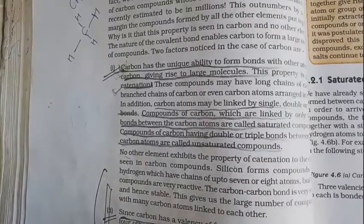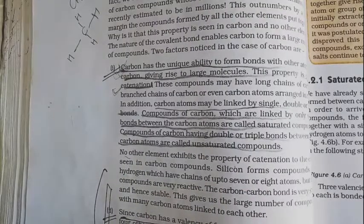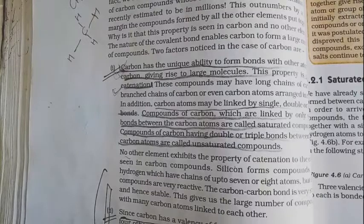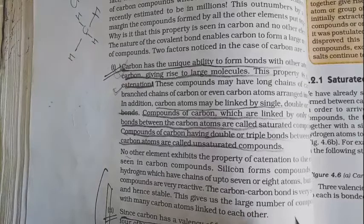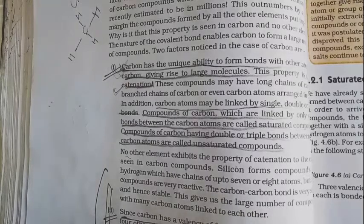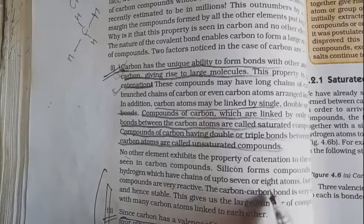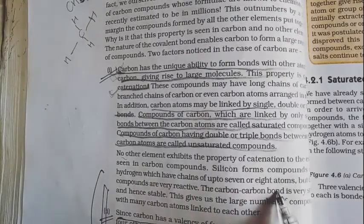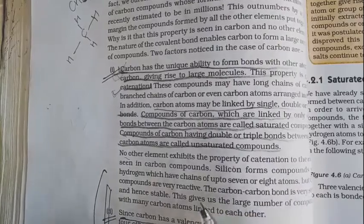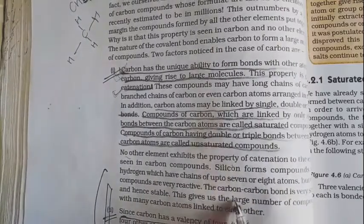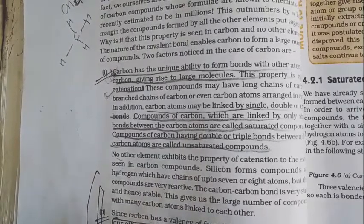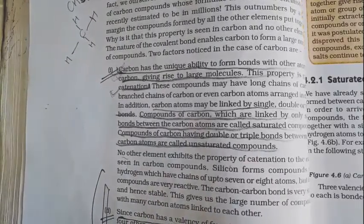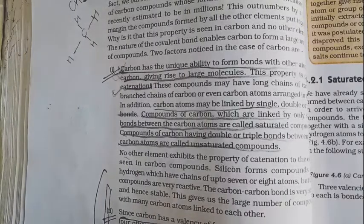If we look at other elements, this property of catenation is very low. For example, if we take silicon, the chain remains up to only seven or eight atoms, and this compound is very reactive. In contrast, carbon-carbon bonds are very strong and stable, and carbon readily bonds with its own atoms.